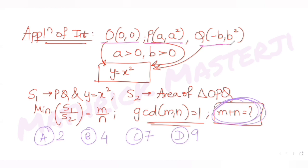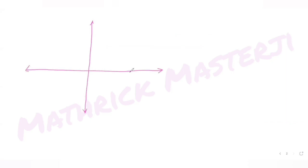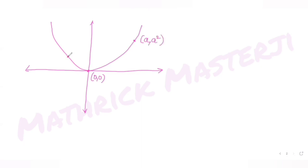We have three points O, P, and Q lying on the parabola y = x². Since the coefficient of x² is positive, the parabola opens upward. The three points are: origin O, P = (a, a²), and Q = (-b, b²). We join P and Q to get line PQ.